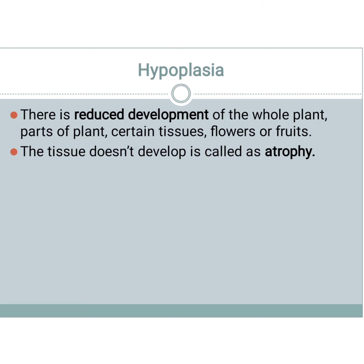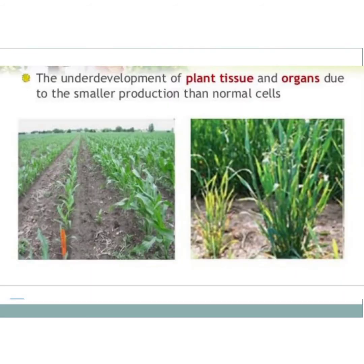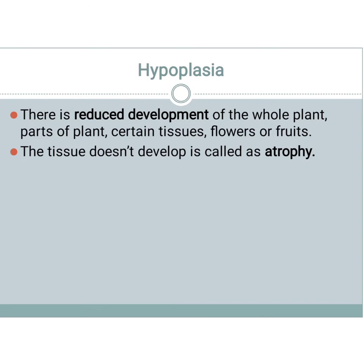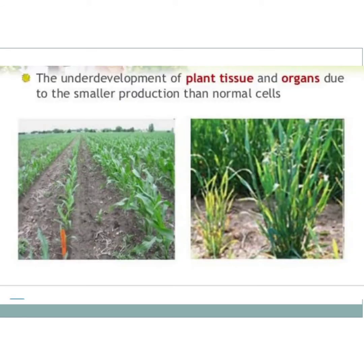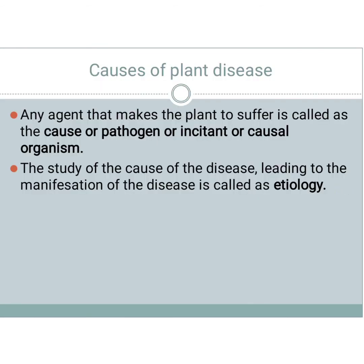Hypoplasia means under-development — 'hypo' means under — there is a reduced development of the whole plant. When tissues do not develop, that condition is called atrophy. You can see hypoplasia in this picture: under-development of plant tissue and organs due to small production of cells compared to normal, resulting in drooping and stunting symptoms.